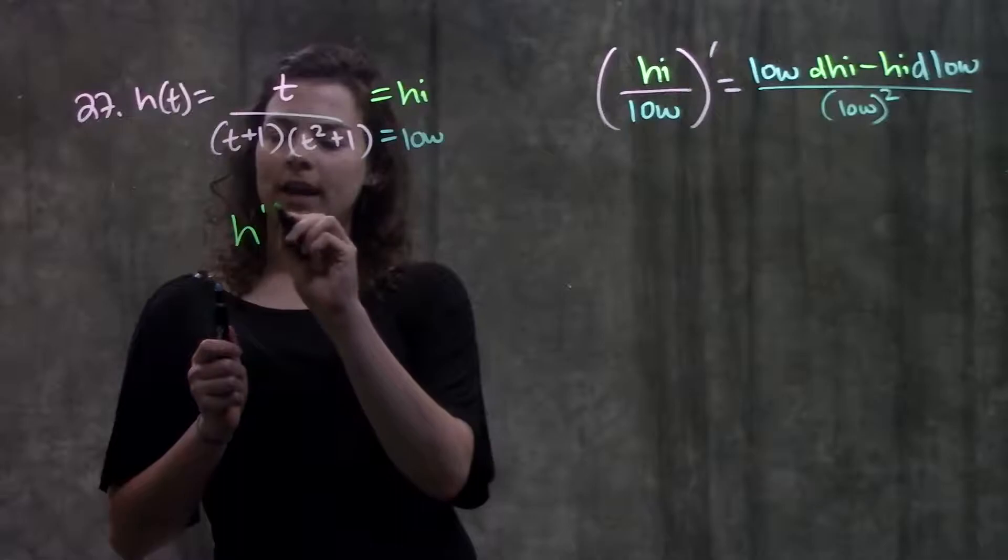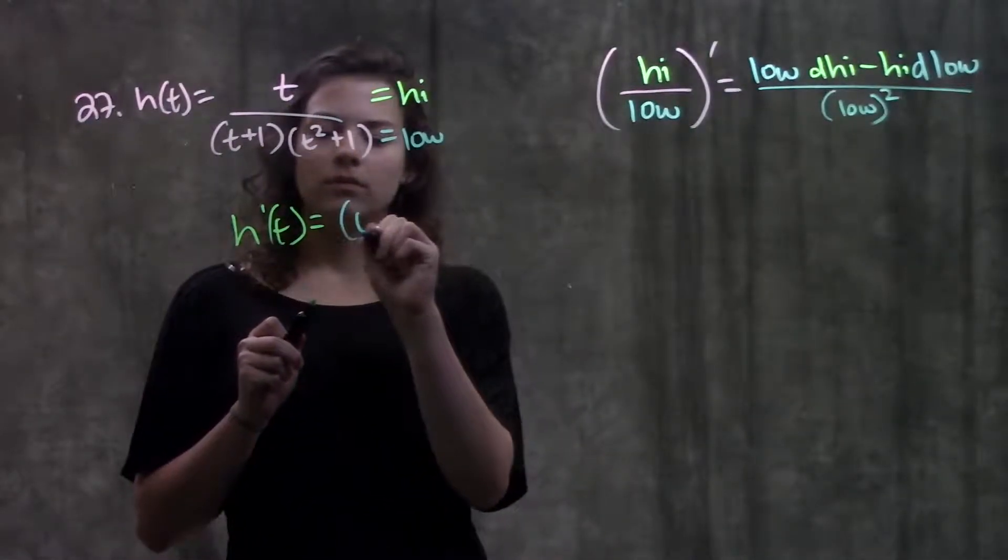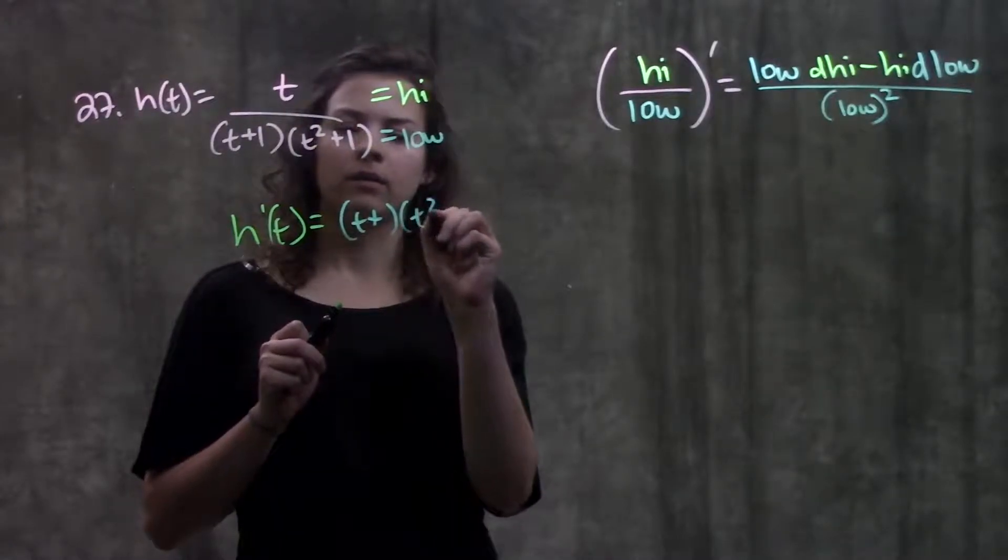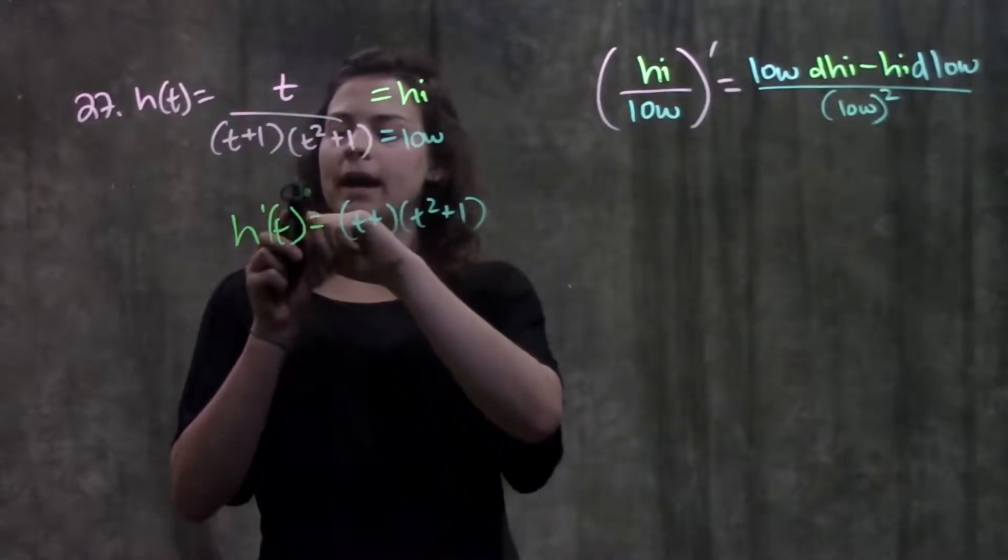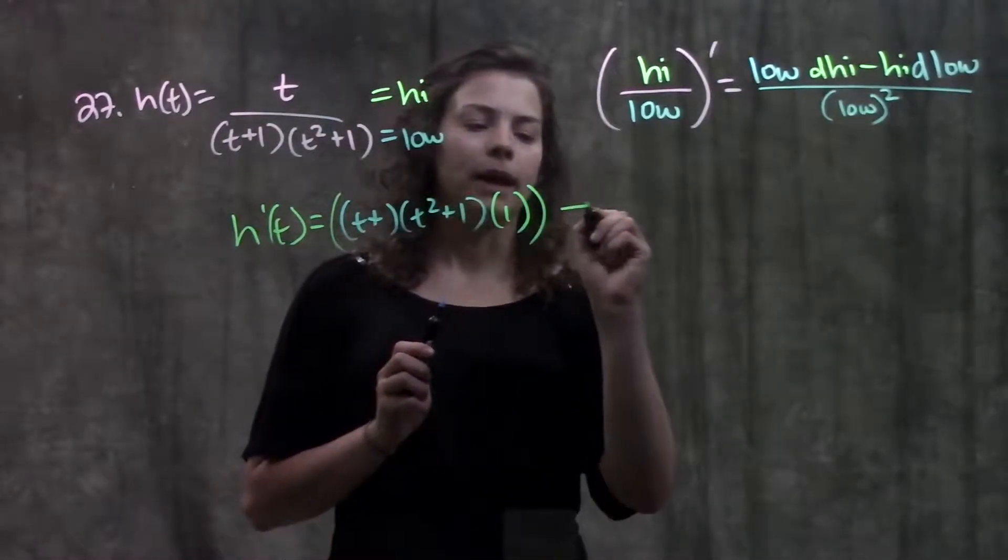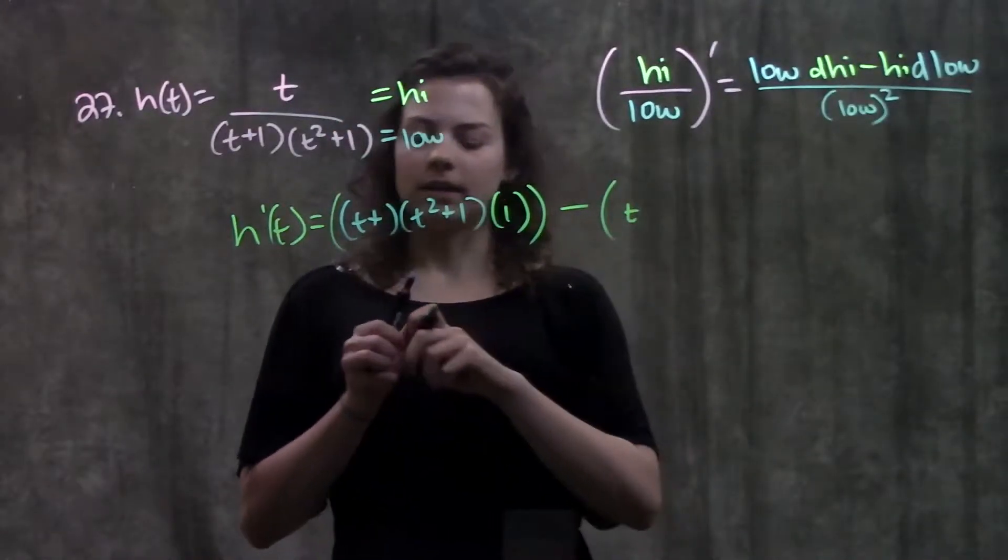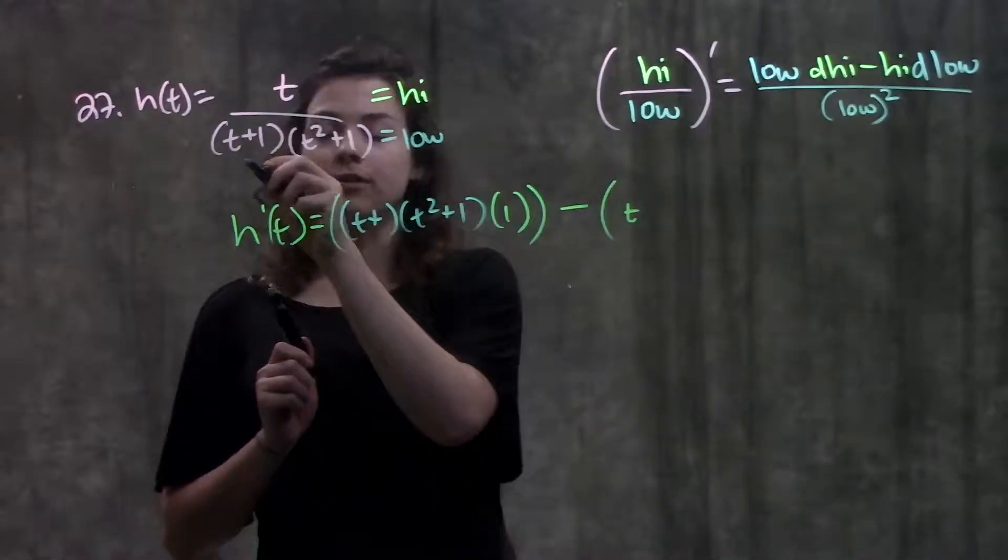So my pattern tells me that for h prime of t, I have my low, the entire denominator times my d high, derivative of t is just one. And all of this minus all of the next part, which is high times d low. Now notice here, in my denominator, I have the product of two functions.